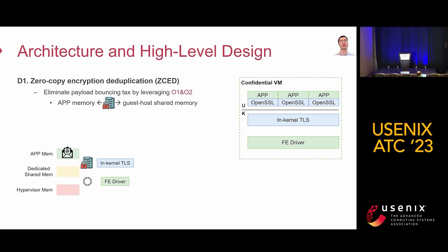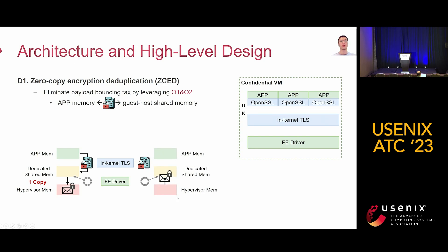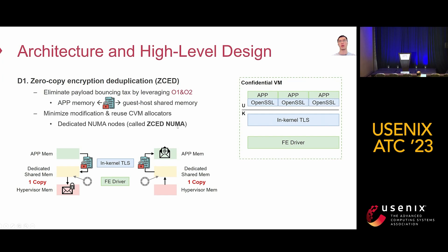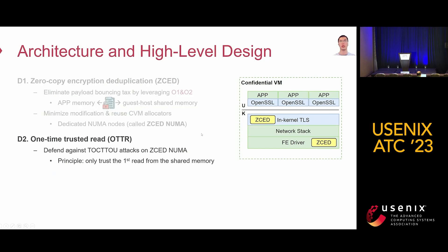The first design is zero-copy encryption and decryption, which eliminates payload-bound bouncing by leveraging the first two observations. The payload is directly encrypted to dedicated shared memory, then copied to the hypervisor memory involving only one copy. Similarly, there is only one copy in the Rx direction. To minimize modification and reuse CVM allocators, we create dedicated memory nodes called ZcedPneuma to serve as the dedicated shared memory. ZcedPneuma components reside in the in-kernel TLS layer and the frontend driver layer. Since ZcedPneuma memory is shared with the untrusted hypervisor, we propose one-time trusted read (OTTR) to defend against TOCTOU attacks. Our principle is to only trust the first read from the shared memory, enforcing protections in both Tx and Rx directions.